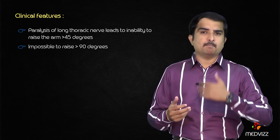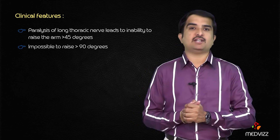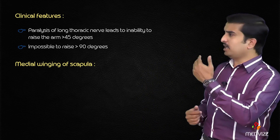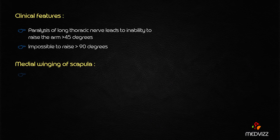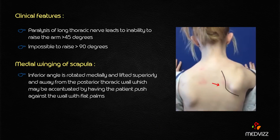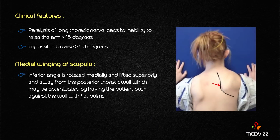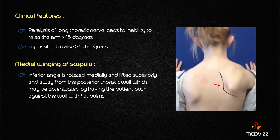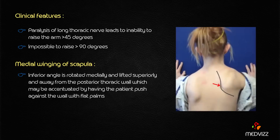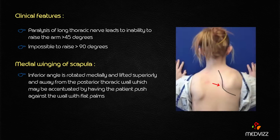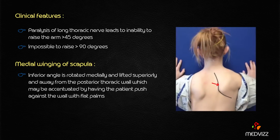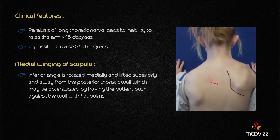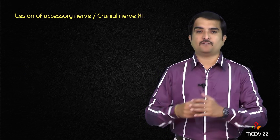It is impossible to raise the arm beyond 90 degrees. There is a medial winging of the scapula, where the inferior angle is rotated medially and lifted superiorly and away from the posterior thoracic wall. This may be accentuated by having the patient push against the wall with flat palms.